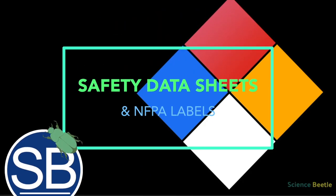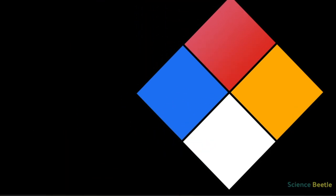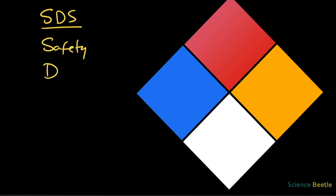Hey, welcome back students. I wanted to take this moment to go over the SDS and the NFPA label. When we talk about SDS, what we're really talking about here is the safety data sheet. Safety data sheets are a collection of 16 different sections that you use to identify hazards for any given element or compound.